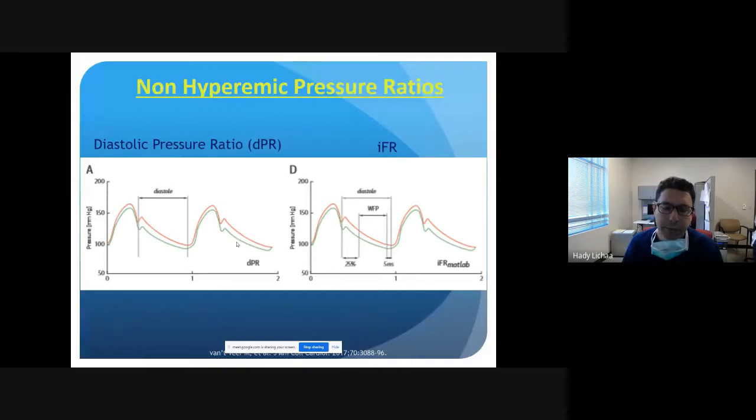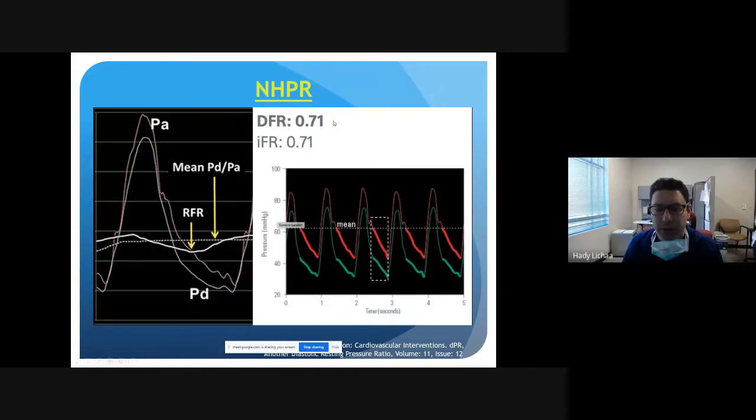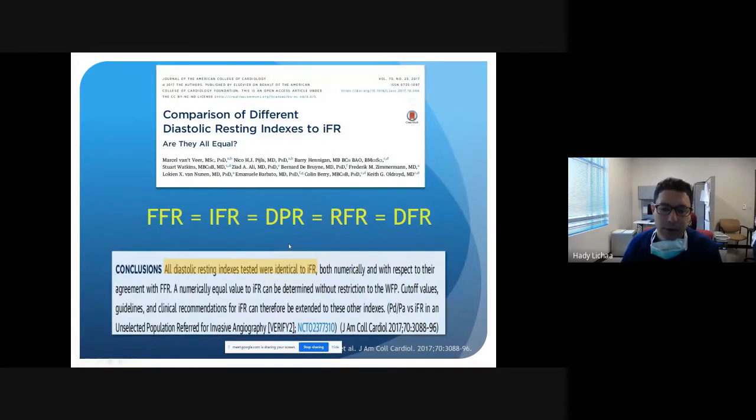What are the other non-hyperemic pressure ratios? DPR is another company, Obsense makes that, that measures the ratio throughout the entire diastolic phase rather than the wave-free period. If you see DFR, that's from a different company, Boston Scientific, that also measures the ratios in diastole across the lesion. RFR is made by Abbott that measures the biggest difference in pressure throughout systole and diastole. Long story short, that's an alphabet soup of letters, but all these indices are equivalent. FFR cutoff of 0.8 and all the other indices cutoff is 0.89.